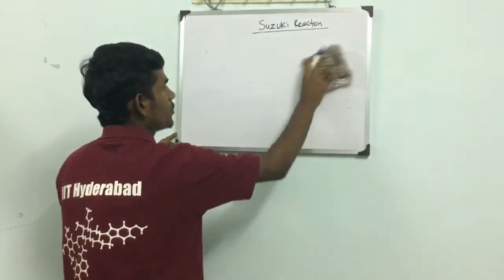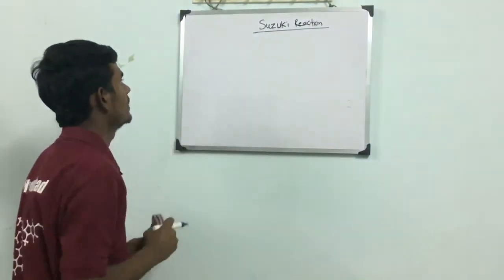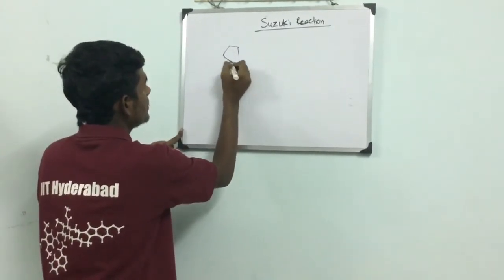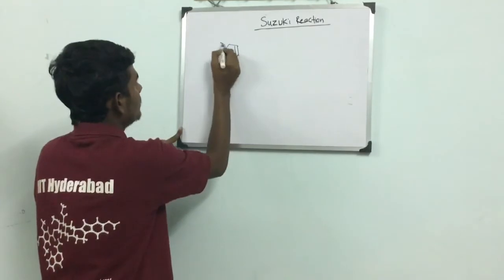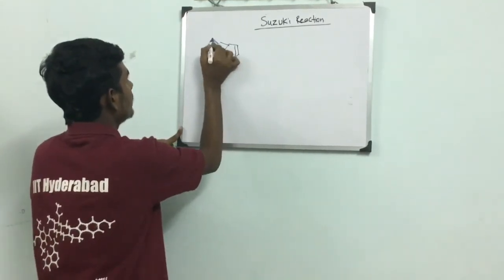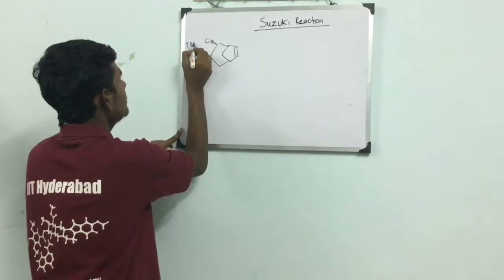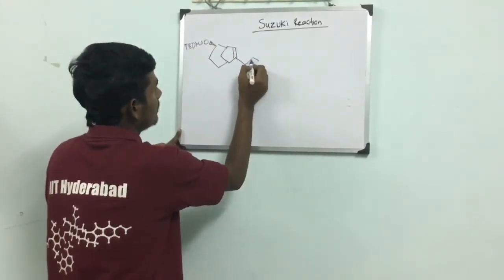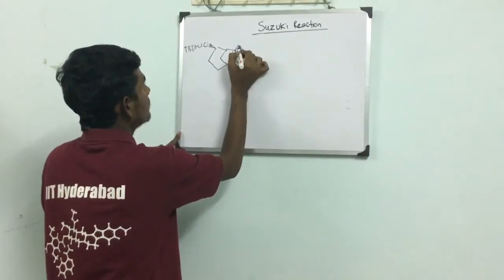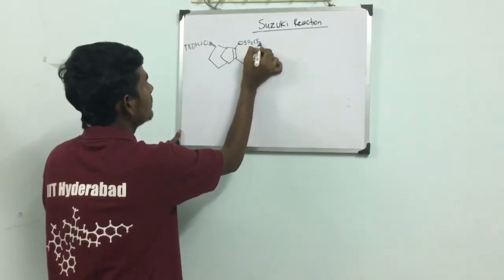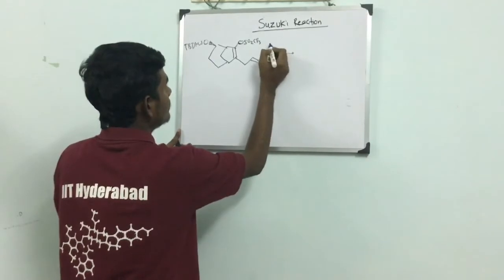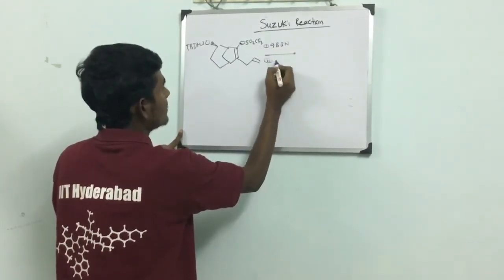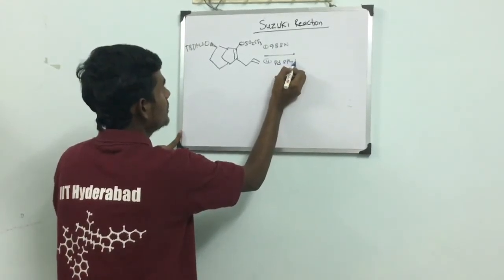First I will show an example which is very interesting and intramolecular. What is this? There is double bond, oxygen is TBDMS. In another double bond here, O-SO2-CF3. We have 9-BBN, and the second step corresponds to palladium Pd(PPh3)4.